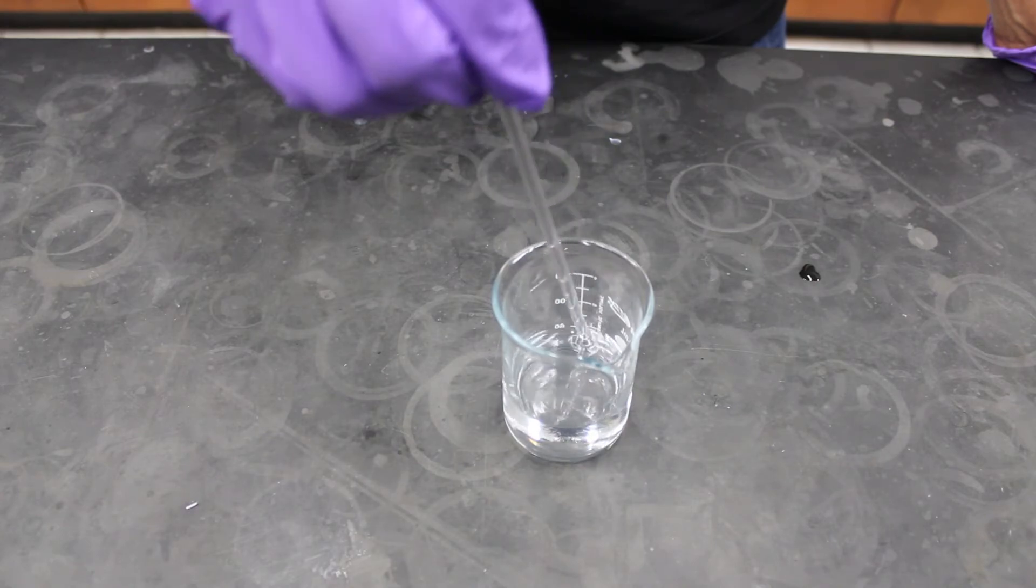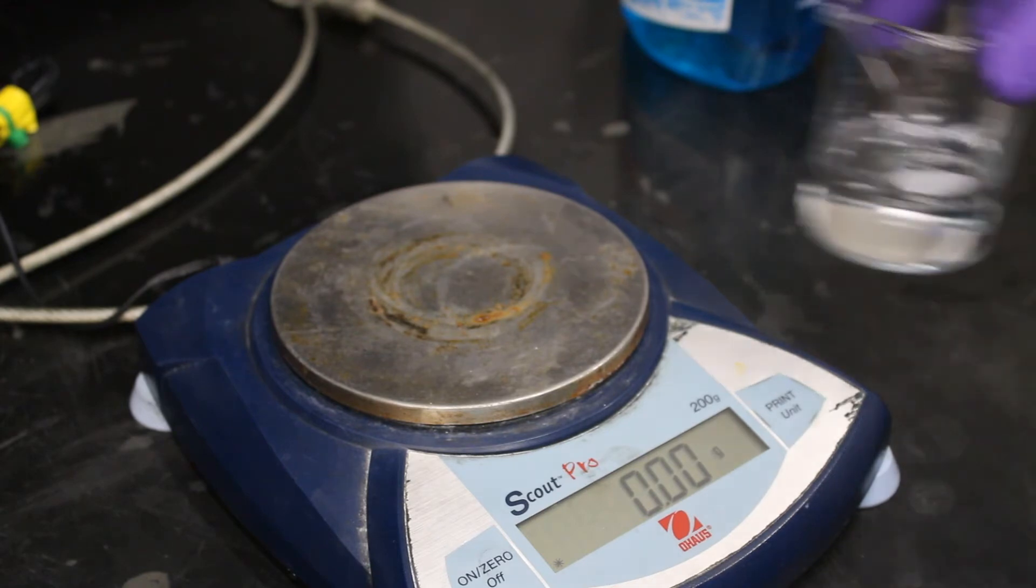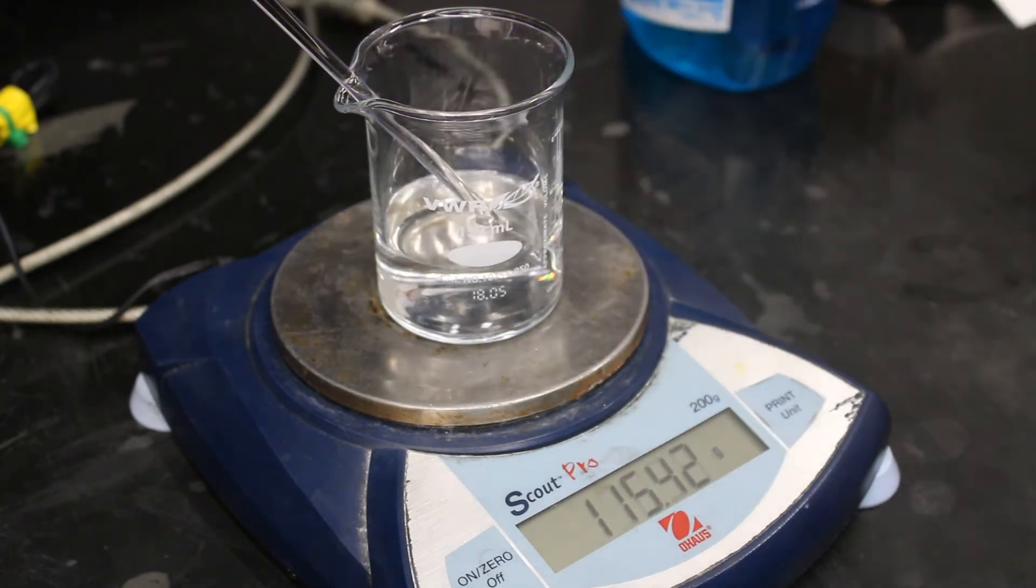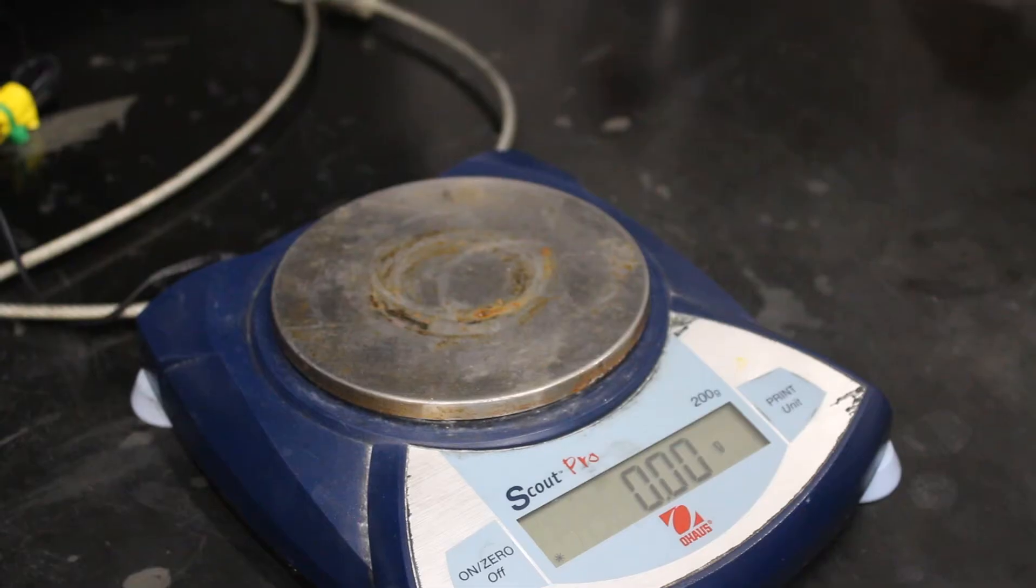Once the citric acid is completely dissolved, measure the mass of the beaker, solution, and the glass rod. Once you use your glass rod, it shouldn't be removed from the beaker because it will affect the final calculations. Note down this reading in your lab manual to the correct number of decimal places in grams.